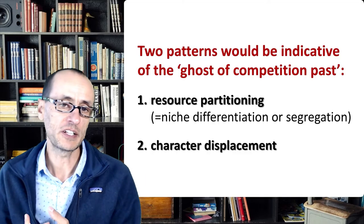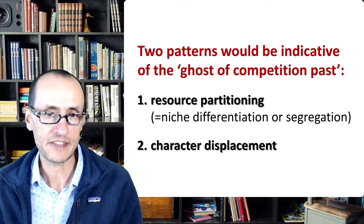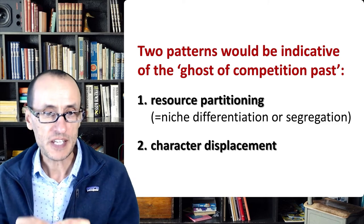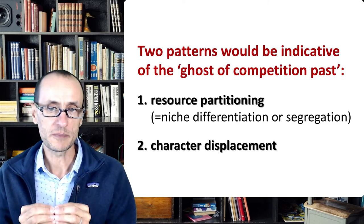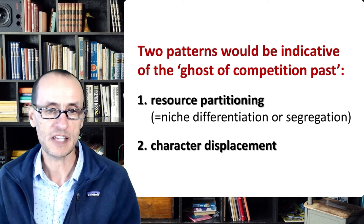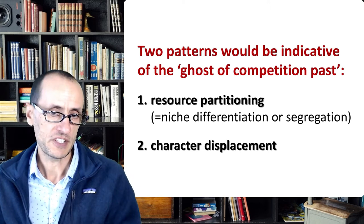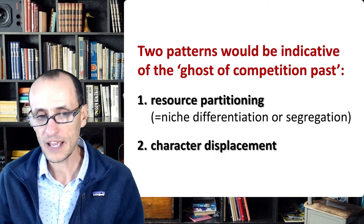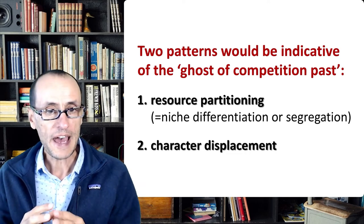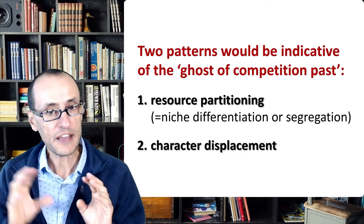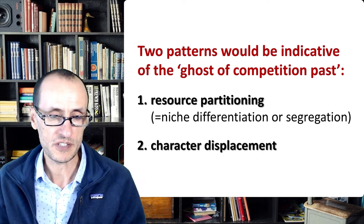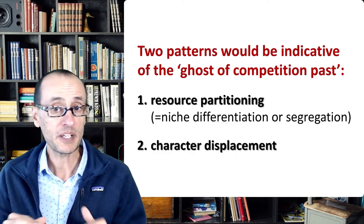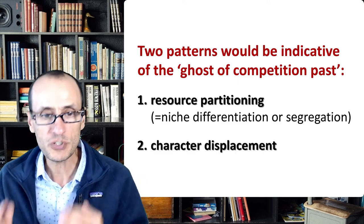Two patterns indicative of a ghost of competition past having existed would be either resource partitioning — the observation that the resource needs of a particular organism differ from others in the same community — or character displacement. Character displacement means there are features of the organism itself, biochemical, physical, or morphological, that differ between two species and allow them to utilize resources in slightly different ways. Resource partitioning often occurs because of character displacement, but these are two different manifestations.